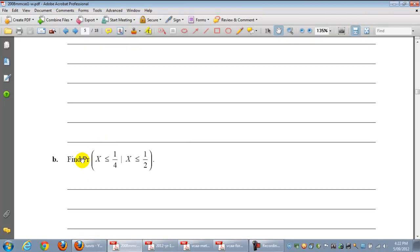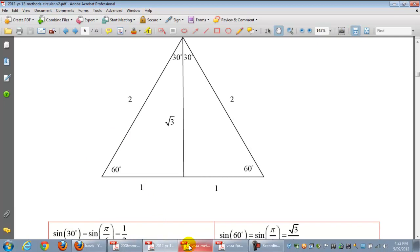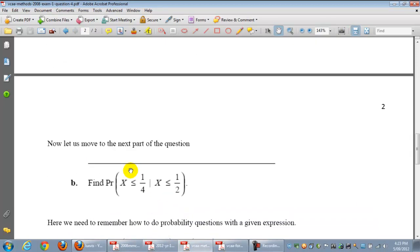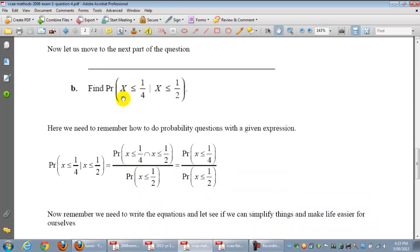So we've done the first part. Now they're asking us to find the probability x is less than or equal to 1/4, given x is less than or equal to 1/2. So you have to recognize what this expression means. So let's go back to the working out.